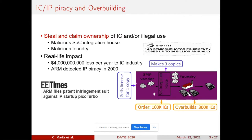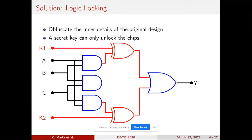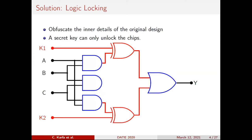Because of the fabulous development of ICs, there are many problems with IP piracy and overbuilding. If your IP goes to a third-party fabrication house, a malicious entity there can steal the IP and overproduce it. The well-accepted solution is logic locking: in your circuit, you add additional keys, give the whole layout to the fabrication house, but you don't give them the keys. The key is only with the authentic user, so even with reverse engineering, without the key they cannot use the IP.